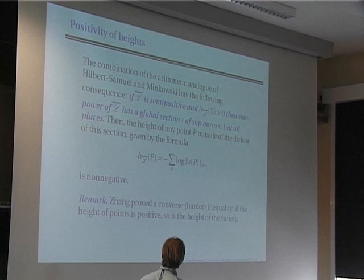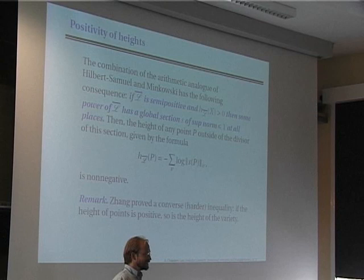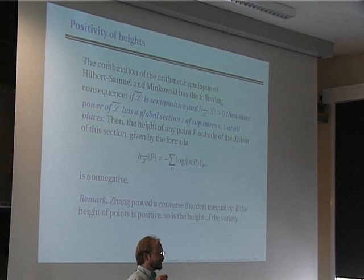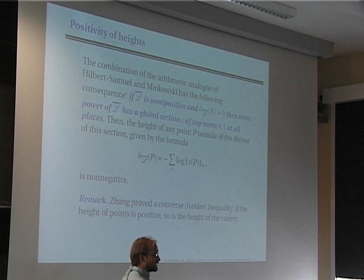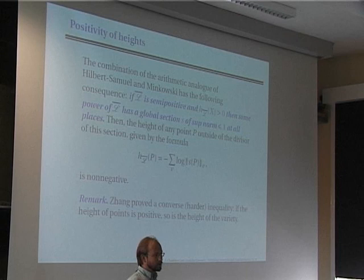This is the easy part of the relationship between heights of points and heights of varieties, which I will use in the equidistribution theorem. There is a harder converse inequality, also due to Zhang, saying that if the height of points is positive then the height of the variety will be positive. The easy side is related to Hilbert–Samuel, and the hard side is related to a Nakai–Moishezon criterion in arithmetic geometry — you need a criterion for a line bundle to be ample in arithmetic geometry.